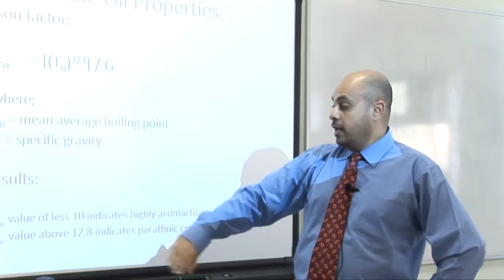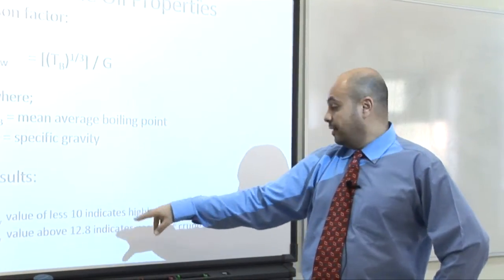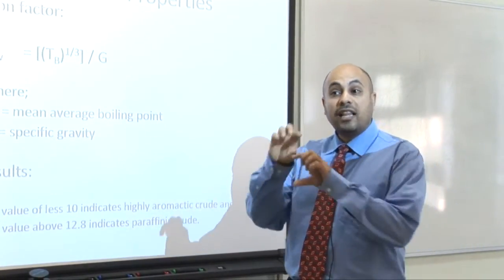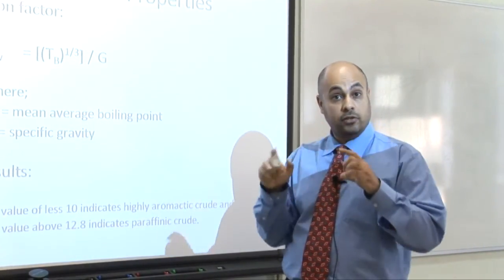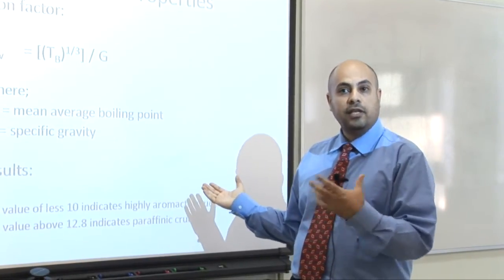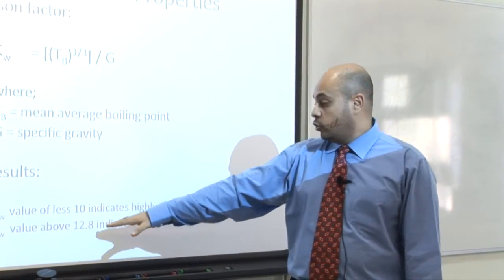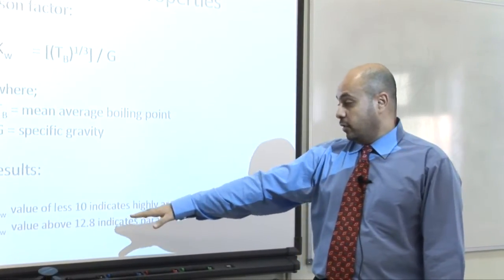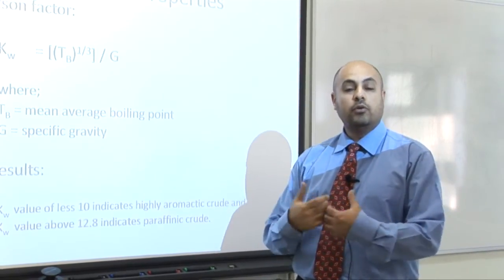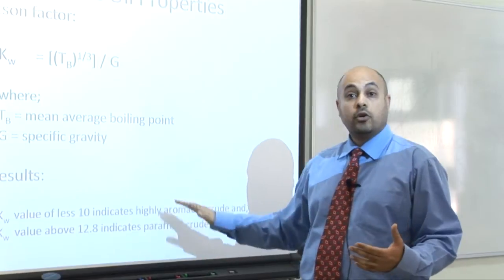Why is the Watson factor important? If the value is around 10, it indicates highly aromatic crude — meaning lots of rings in the carbon structure, so you have lots of benzene, lots of diesel, and heavier components. If the number is 12.8 and above, it's highly light crude. We call them paraffins — like methane, ethane, propane, butane.